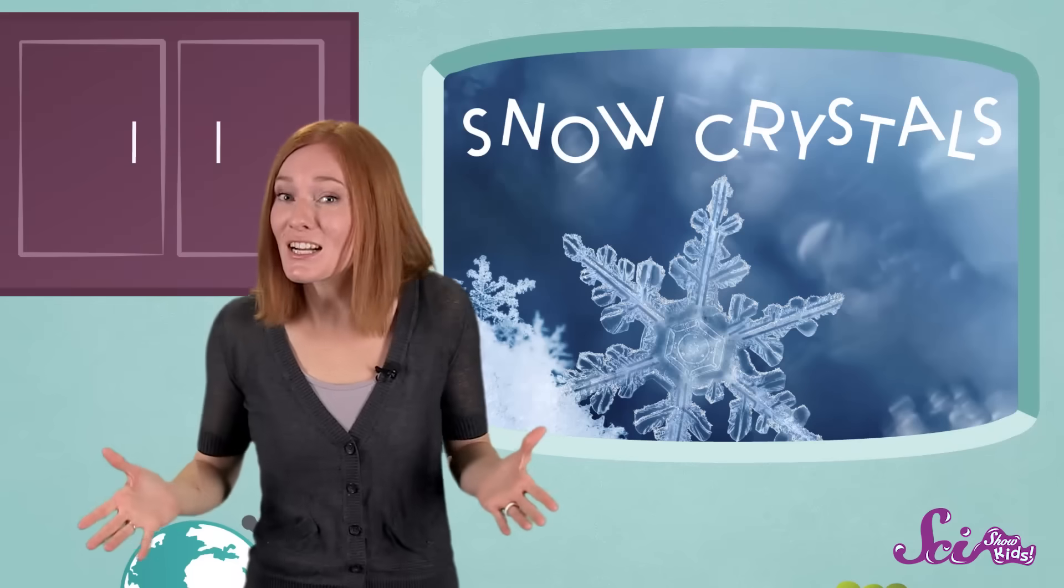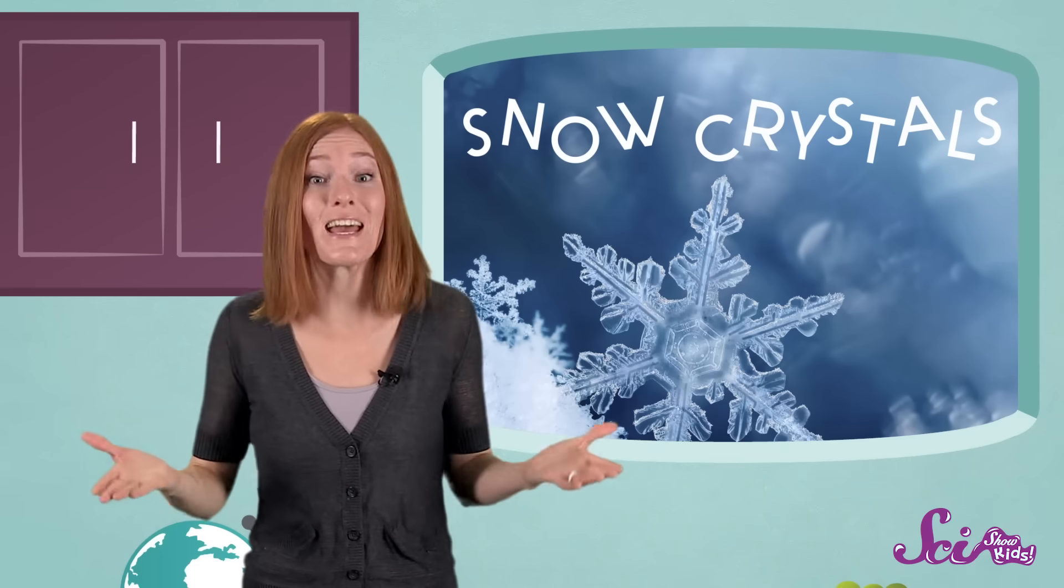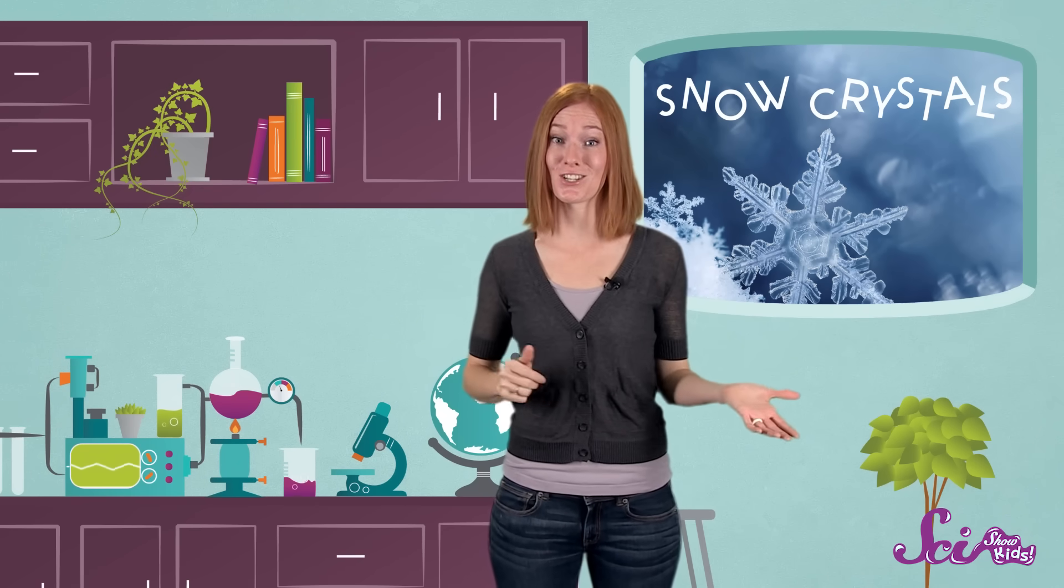Now, you might have heard that no two snowflakes are alike. A lot of them do look really similar to each other. But scientists think that it would be really hard for any two to end up being exactly the same. That's because the conditions in the clouds are always changing. So the flakes that they make are always changing, too.